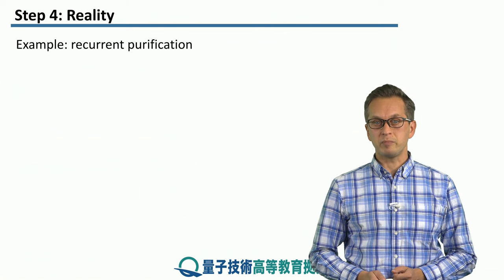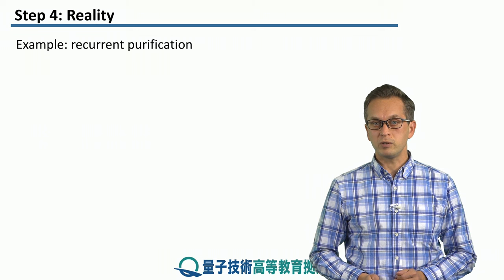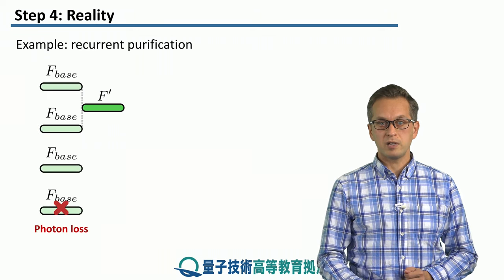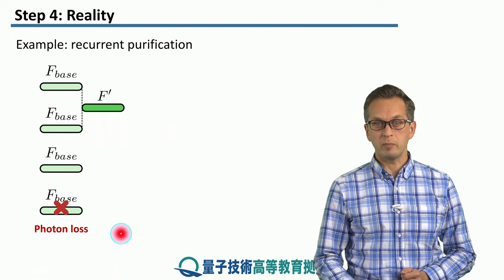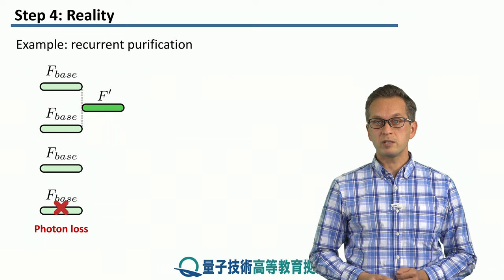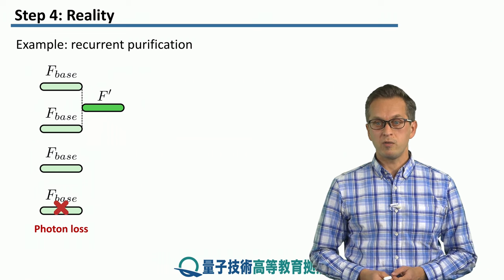So let's consider an example. We're going to go back to our first schedule that we considered, the recurrent purification scheme. And again, we start with four bell pairs. Here, we have our base bell pairs, which we purify, and we succeed, and we get a new bell pair of fidelity F prime.